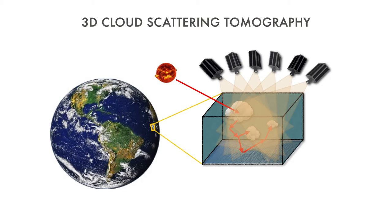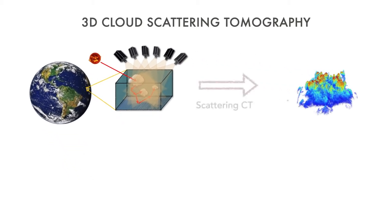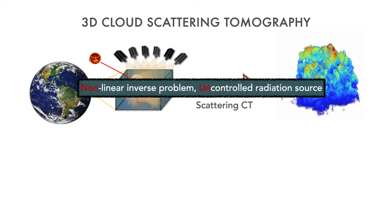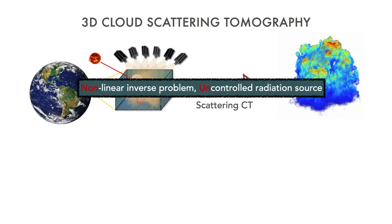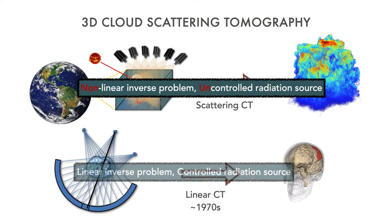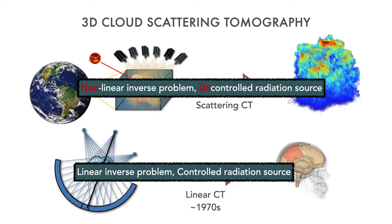Cloud scattering tomography is based on high-resolution multi-view images from space. Cloud tomography relies passively on multiply scattered sunlight, creating a nonlinear inverse problem. This is in contrast to medical x-ray CT, which uses a controlled source, a signal based on direct transmission, and an approximately linear inverse problem.